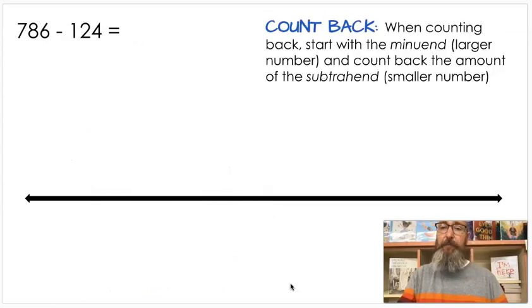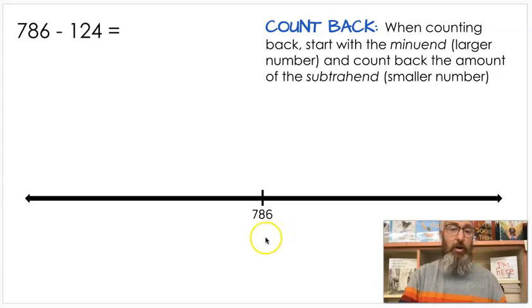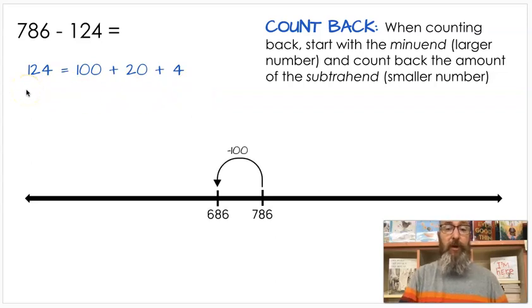Now let's count back. When you're counting back, you start with the minuend, the larger number, and you count back the amount of the subtrahend. We're not trying to get to the subtrahend. We're just counting back that much. So I'm going to start at 786. And when we subtract, our numbers decrease, they get smaller. So we're going to go ahead and put that on the larger end of the number line. And I'm going to look at 124. That tells me what my jumps should be. I'm going to jump 100, 20, and 4.